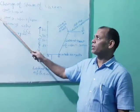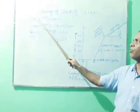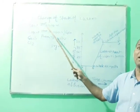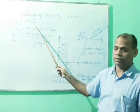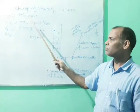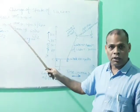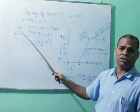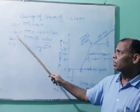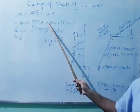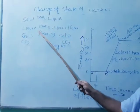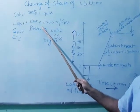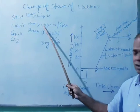The minimum temperature at which solid converts into liquid state at one atmospheric pressure is called melting point or fusion. The minimum temperature at which liquid changes into vapor form at one atmospheric pressure is called boiling point.